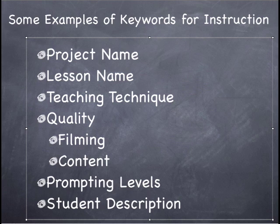Some examples of keywords for instruction: project name may be important — for example, a unit on the rain forest or a unit on a book like Eric Carle's The Very Busy Spider. It could be a lesson name like a guided reading lesson, or a teaching technique such as partner-assisted auditory scanning or using target core vocabulary from your word wall instruction within a social studies lesson.